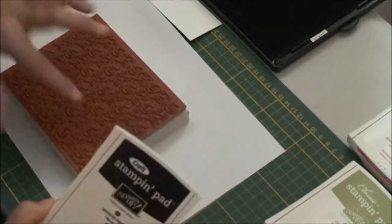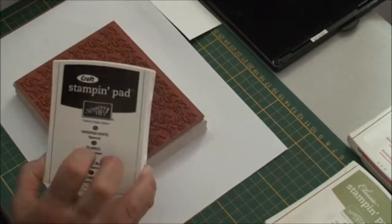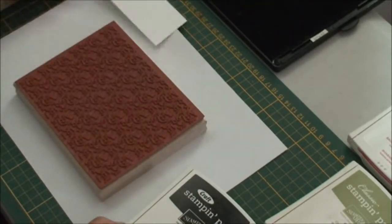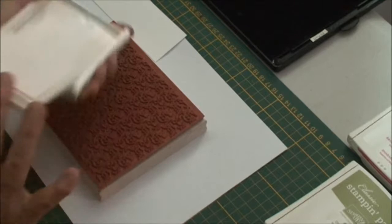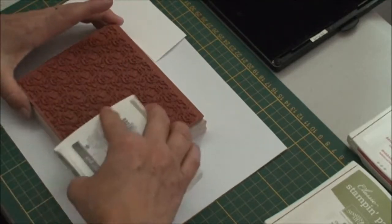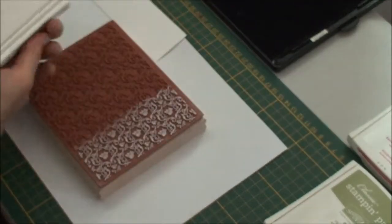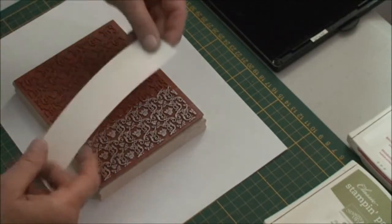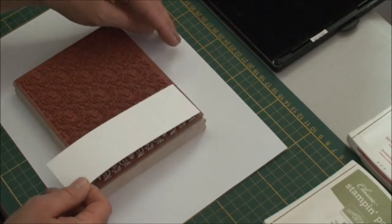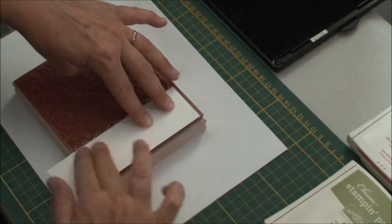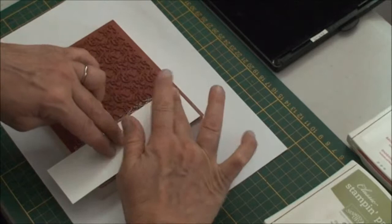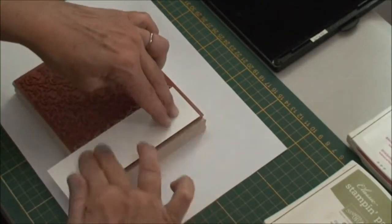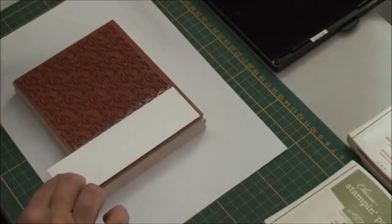First of all, we're going to ink up just part of this background stamp because I'm actually only going to be stamping this small portion of card this time, just as a demonstration. So stamp it up with white craft ink. I do often use my background stamps upside down, seems to be easier because of the size of them.